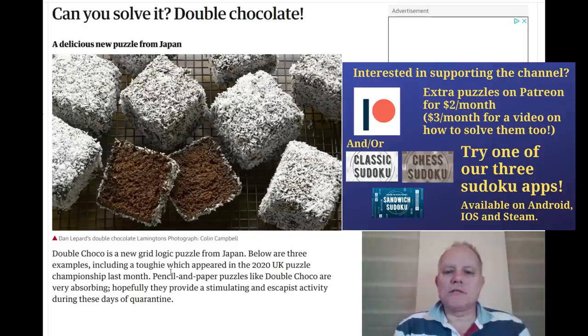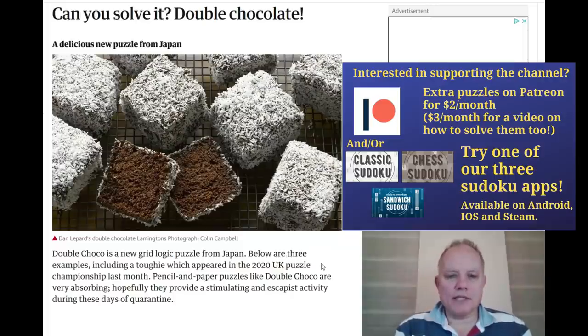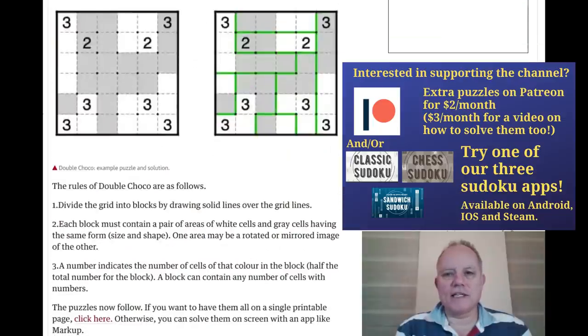A picture of some very appealing Lamingtons. And it says Double Choco is a new grid logic puzzle from Japan. Below are three examples, including a tough one which appeared in the 2020 UK Puzzle Championship last month. And here, here to that.